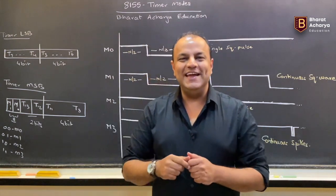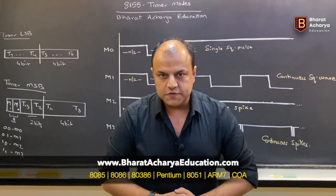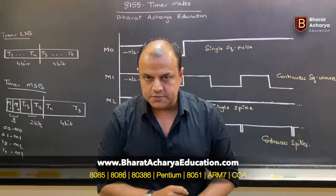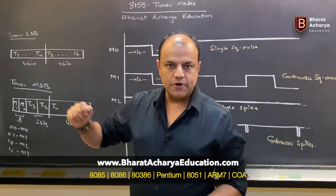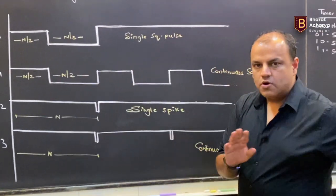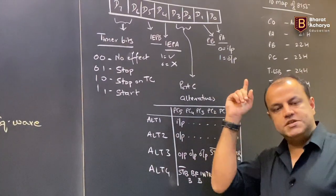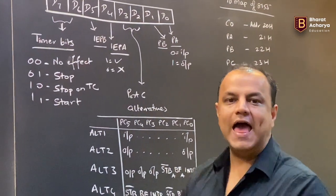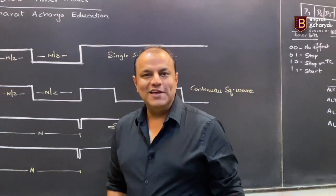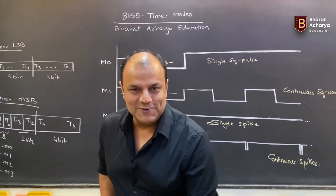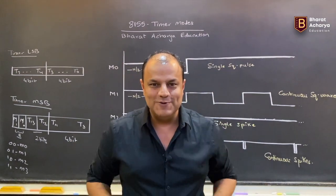So we are doing 8155 timer modes. Let's get serious. 8155 has 4 modes of the timer. The timer is a 14-bit timer. These are its 4 modes. These are the timer registers in which you program your count and select the mode. To run the timer, you also need to program the control word. I am going to be teaching you the control word, showing you the mapping of this chip, and then we will sum it up with a program. I am going to give you a typical exam question and we will write the program for it.